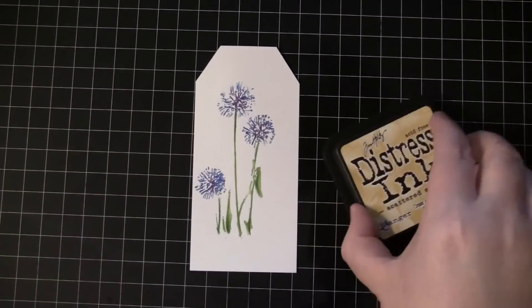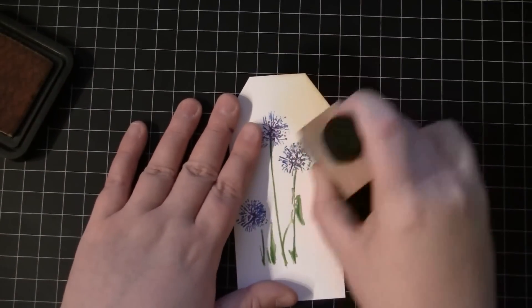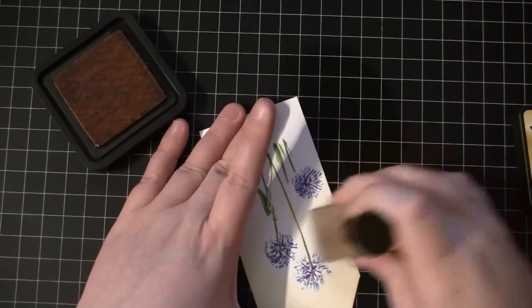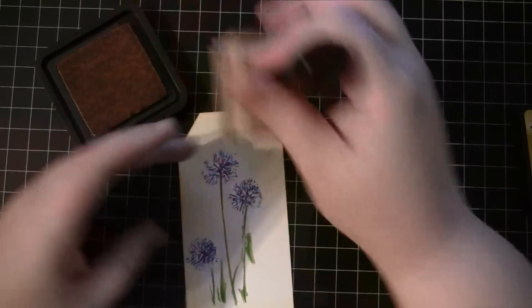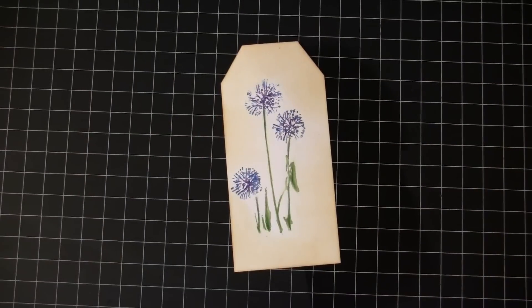On the next tag, I'm using Scattered Straw Distress Ink. And for all of these tags, I'm using the Ink Blending Tool with the Foam Applicator Pad.